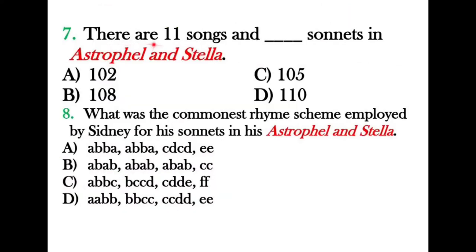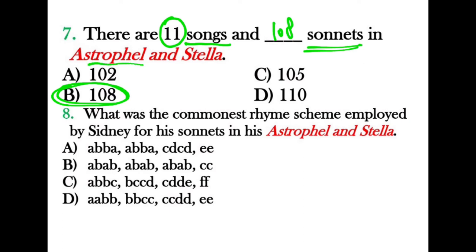Question seven: There are 11 songs and how many sonnets in Astrophel and Stella? The correct answer is 108. There are 108 sonnets and 11 songs in Astrophel and Stella.